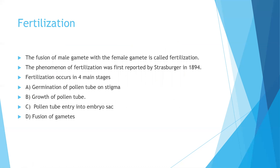What is fertilization? The fusion of the male gamete with the female gamete is called fertilization, and the phenomenon of fertilization was first reported by Strasburger in 1894. The process of fertilization occurs in four main stages: germination of pollen tube on stigma, growth of pollen tube, pollen tube entry into embryo sac, and fusion of gametes.